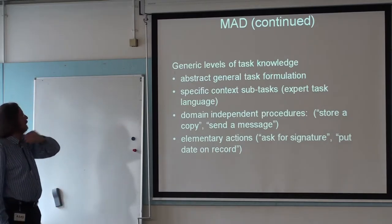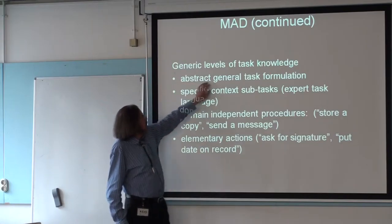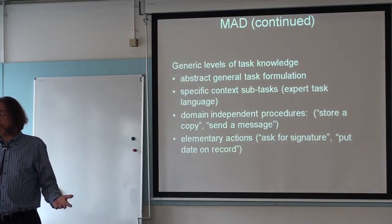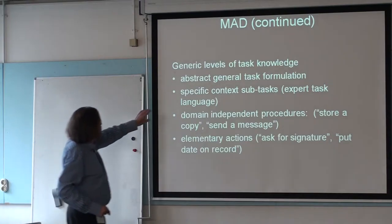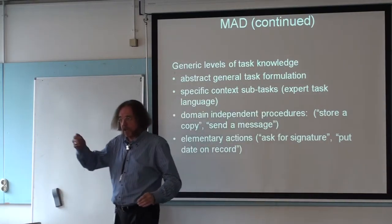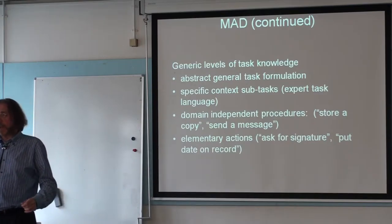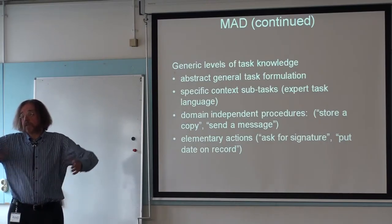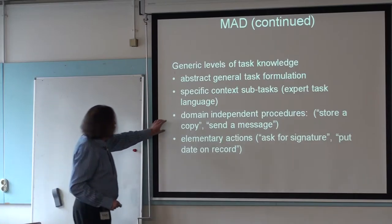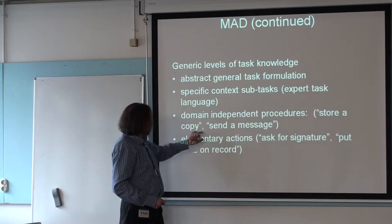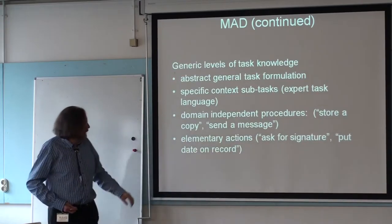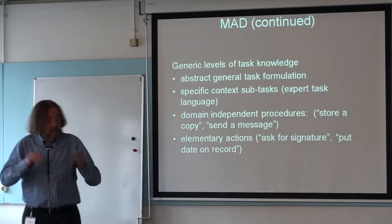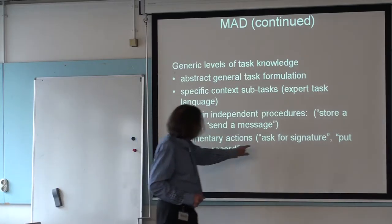You will find that there are levels. The highest level is the abstract formulation — for example, 'helping scientists who are writing a journal paper.' Then you get specific complex sub-tasks, like 'open the digital library of IEEE.' At that point you might not understand the expert message — just write it down. At a lower level you get domain-independent procedures like 'store a copy' or 'send a message.' And then at the end you get elementary actions like 'ask for signature.'